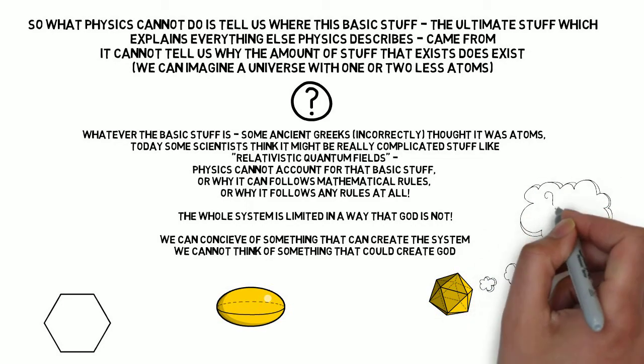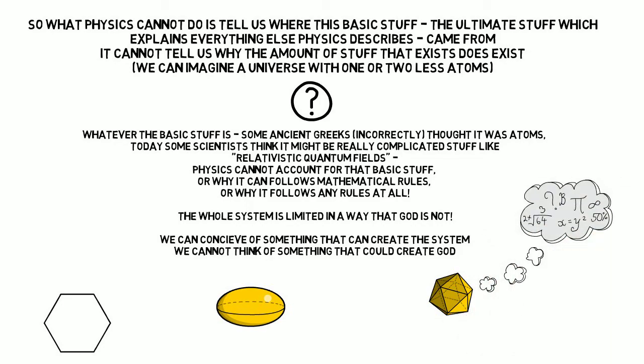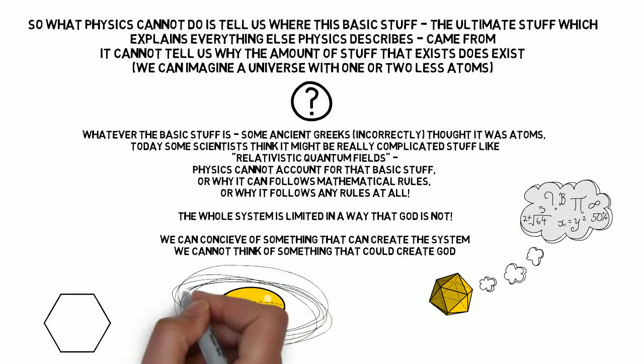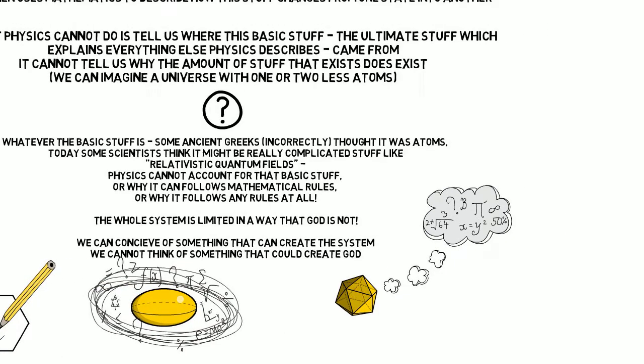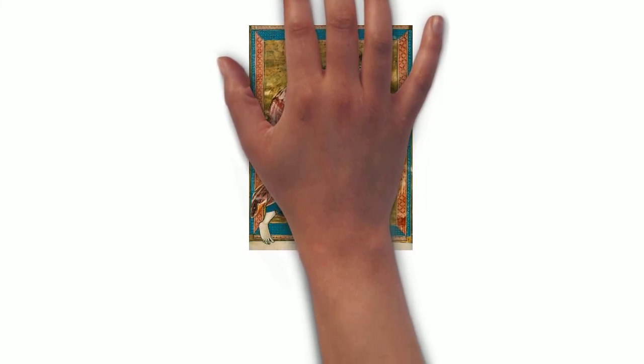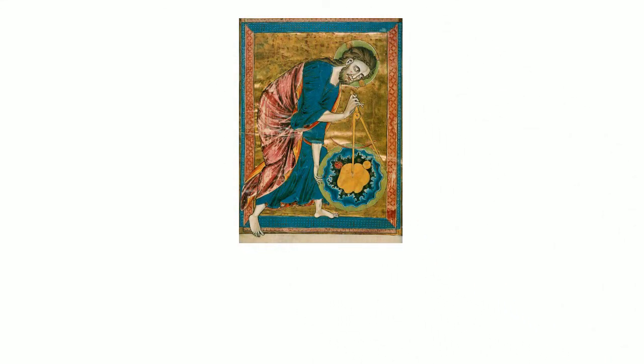Whereas if there's a rational God, He could have made a universe full of this basic stuff, full of particles or fields of force, and He could have set the mathematical rules that those objects would follow. So God becomes the best stopping point for explanation. He explains why everything else would exist.